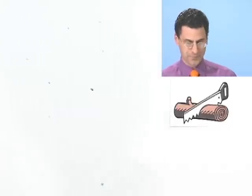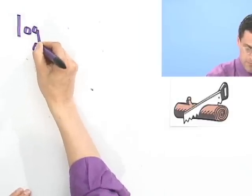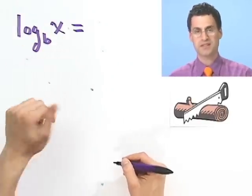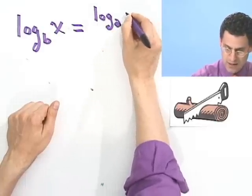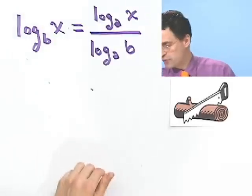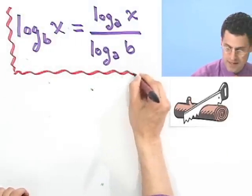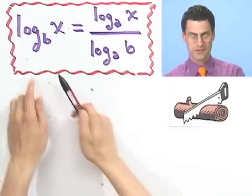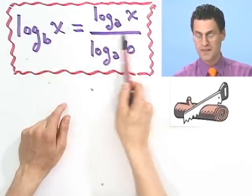So let me show you the change of base formula. I'm going to write it up first and then show you why it's actually true. So here's the formula. If you have log base b of x and you want to change the base to something else, let's say to base a, all you do is take log base a of x and divide it by log base a of b. That is the formula. So if you have a logarithm in terms of b as a base, but you want a logarithm in terms of a as a base, well this is the conversion.